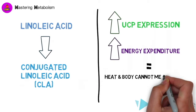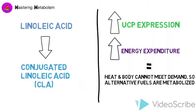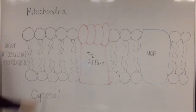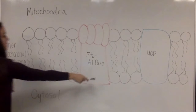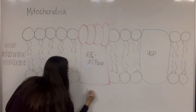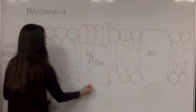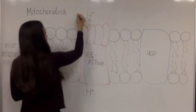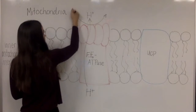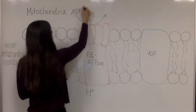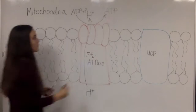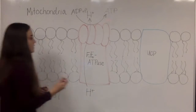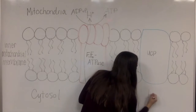UCPs are protein channels embedded within the inner mitochondrial membrane that permit hydrogen ions to enter the matrix. In the absence of these proteins, an electrochemical proton gradient is formed across the inner membrane, uncoupling electron transport to oxidative phosphorylation. As these hydrogen ions pass through the F1, F0 ATPase, energy is synthesized.